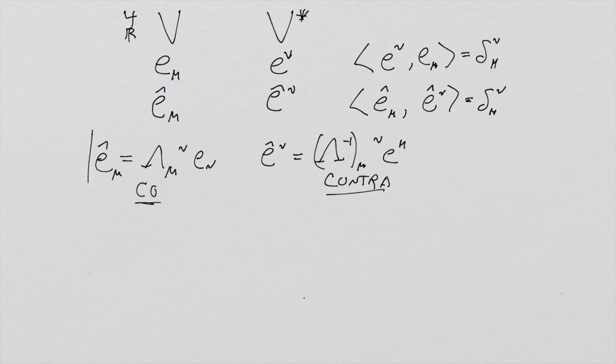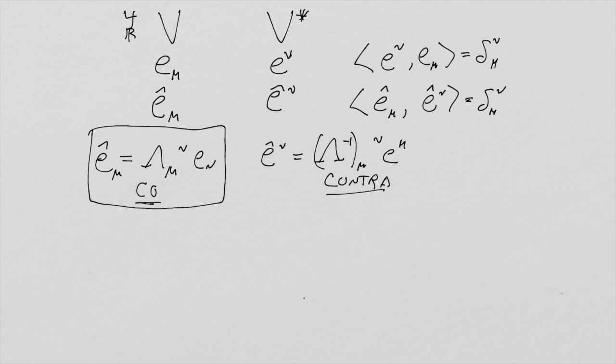This actually defines covariance. The basis vectors of the underlying vector space are where we started the whole story. So if we change the basis vectors with a matrix, that matrix is where we start, and everything that works opposite to that matrix — like the dual basis — we call 'contra.' That is completely the origin of this language, and it's not any more complicated than that.